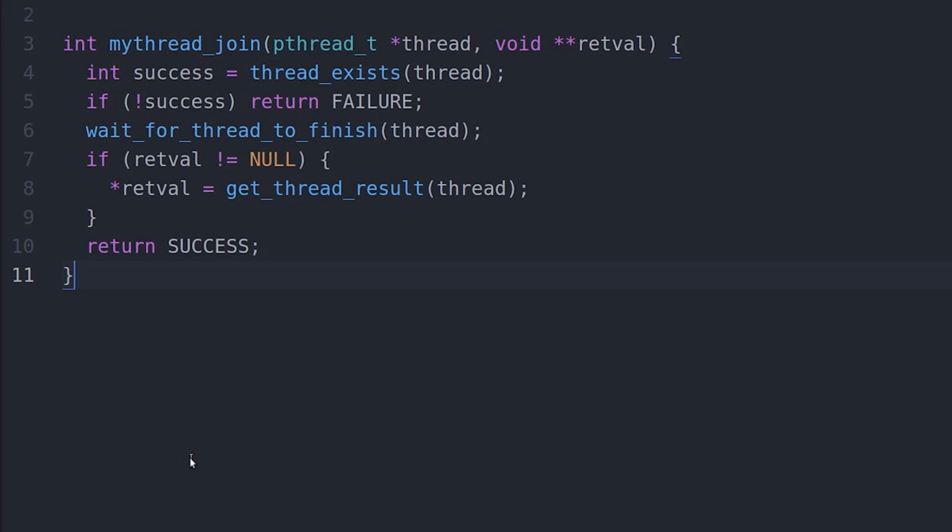But in this case, because I want it to be optional like pthread_join, I'm checking to see if this retval pointer is null. And then I'm going to ignore it. Then I'm not going to return anything. But if it's not, then I'm going to take the result and I'm actually going to store that at the address that was provided. So I'm actually going to put that in.